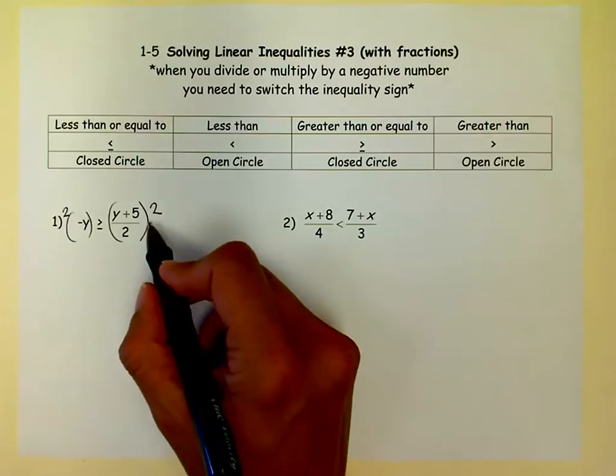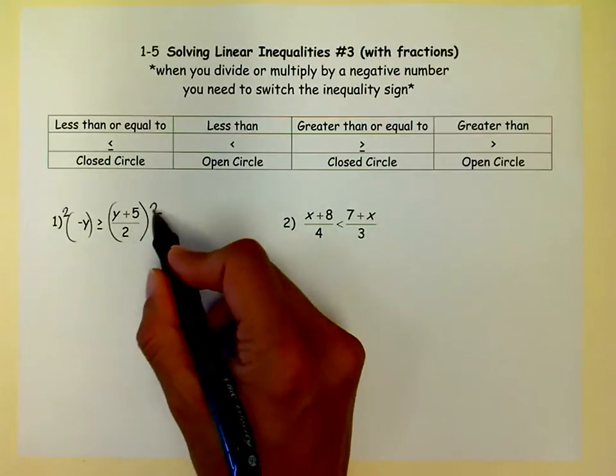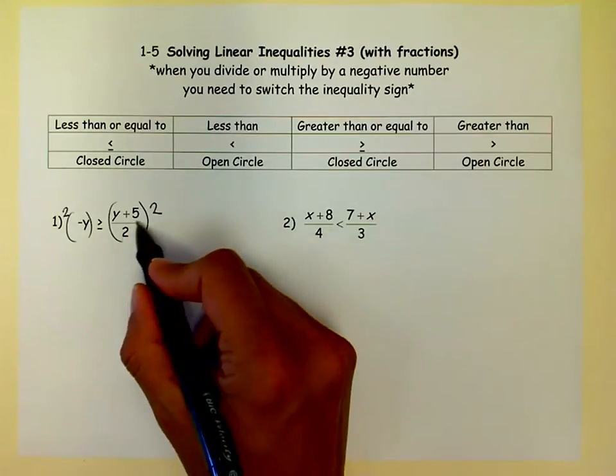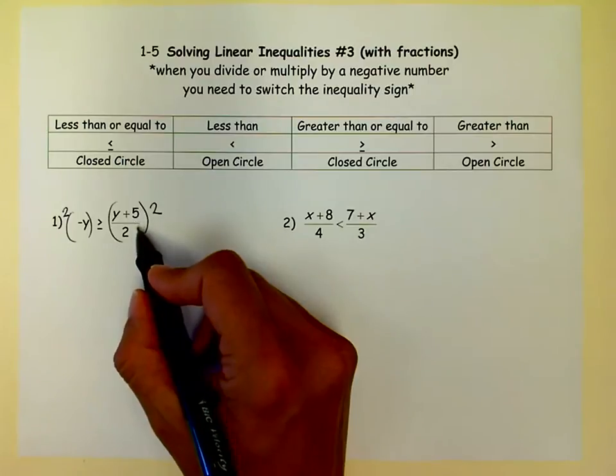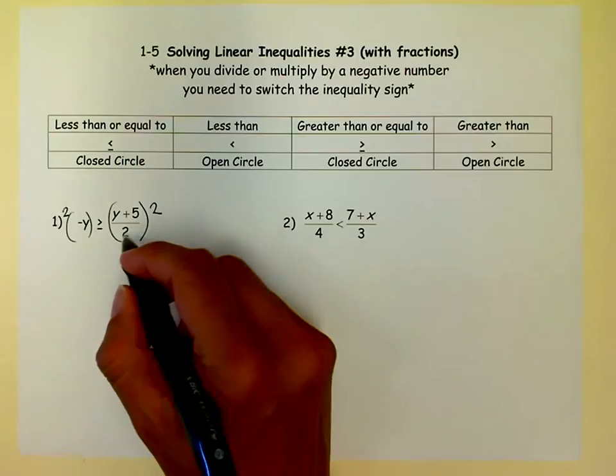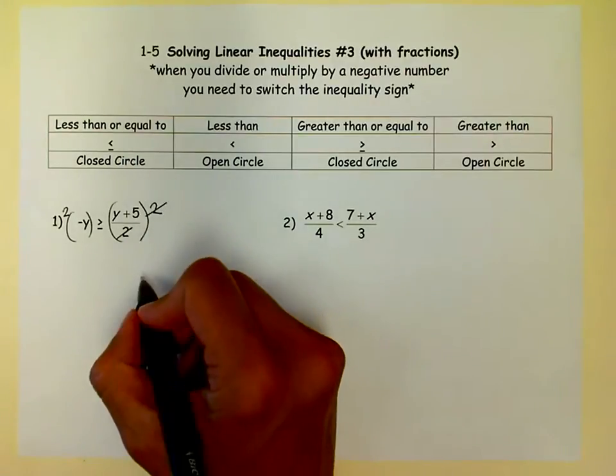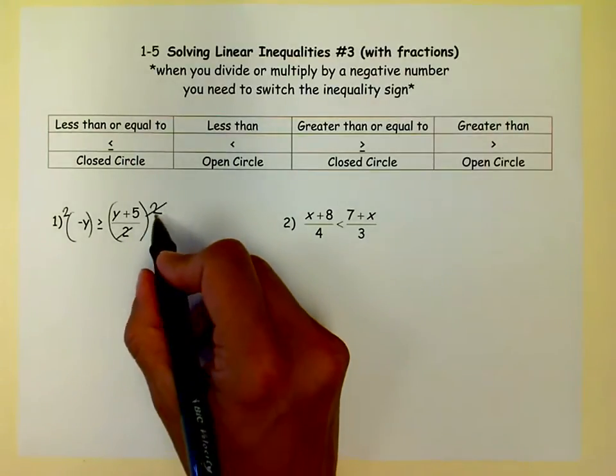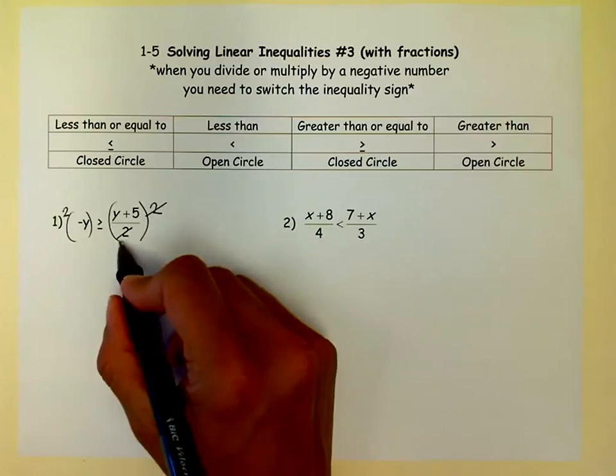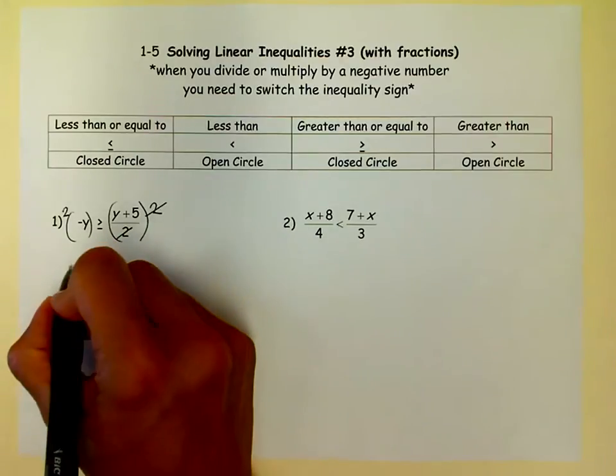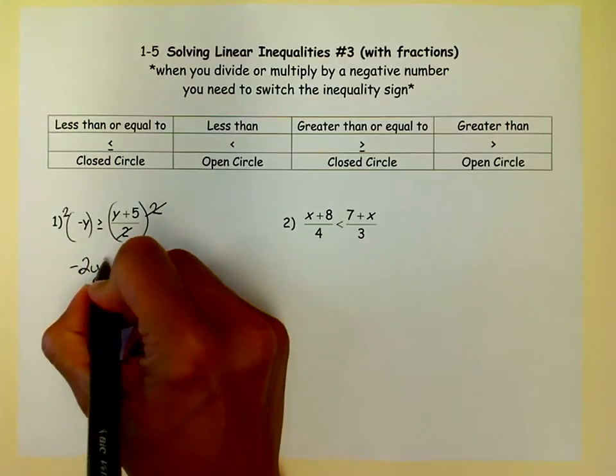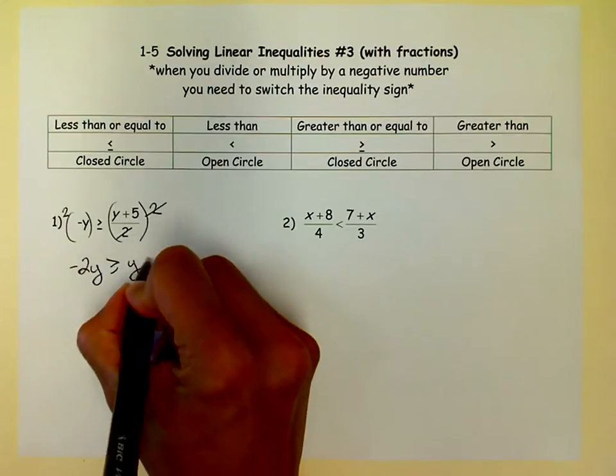The biggest mistake kids make here is that they don't cancel first. Remember that multiplication and division, this is the division sign of the fraction line, they have the same priority in the order of operations. So I can divide before I multiply and it just makes things a lot easier if you cancel these first. So now that's gone and my new inequality, after I had done that, looks like this.